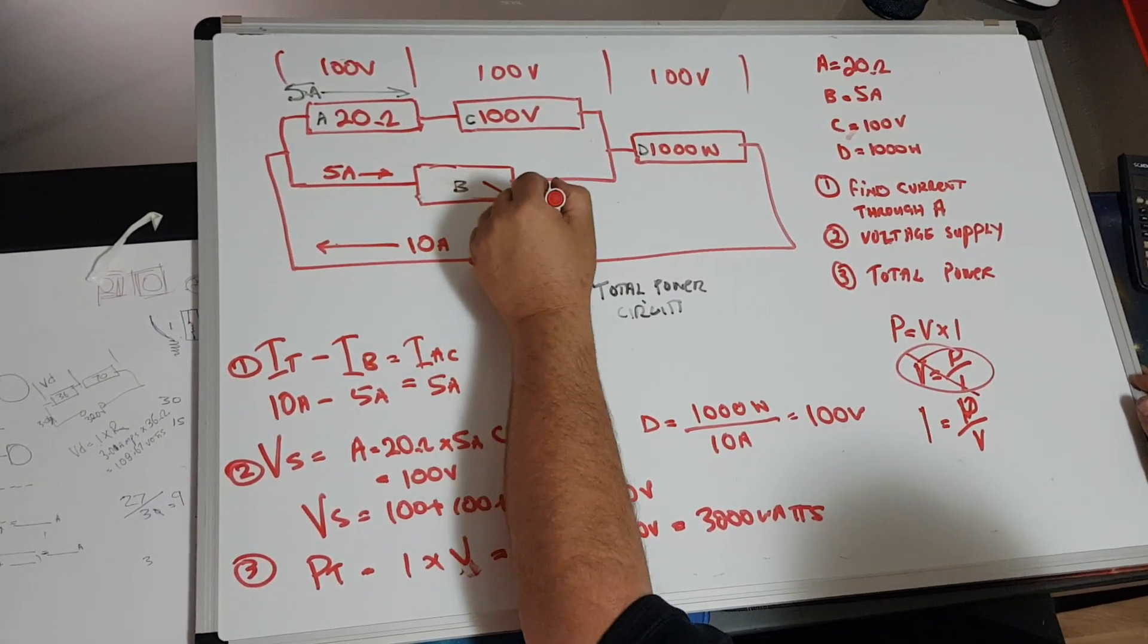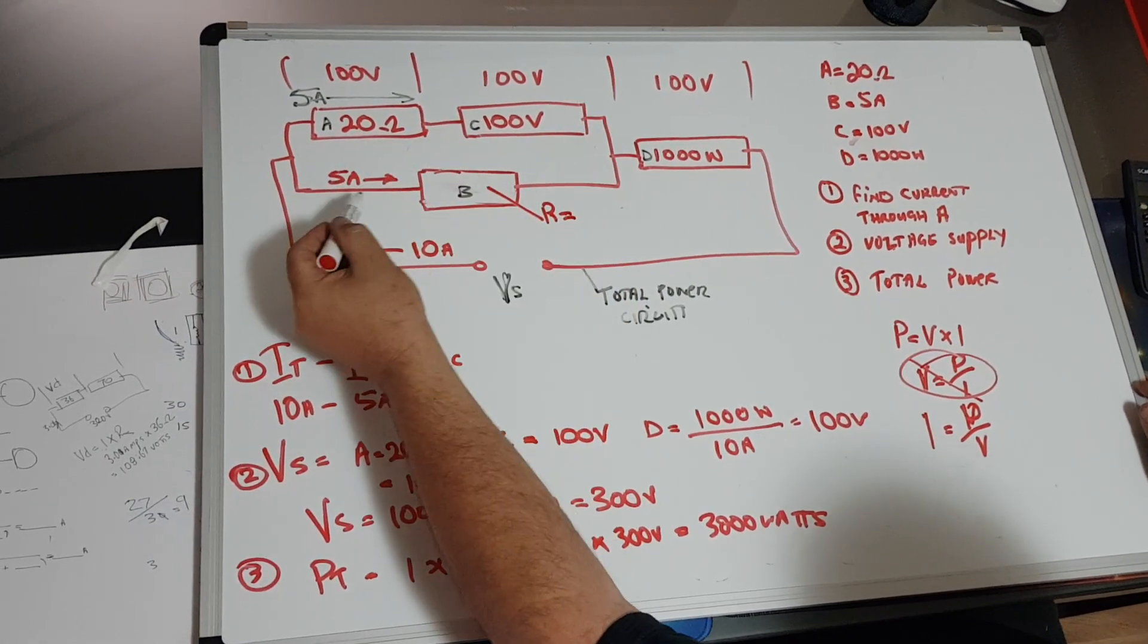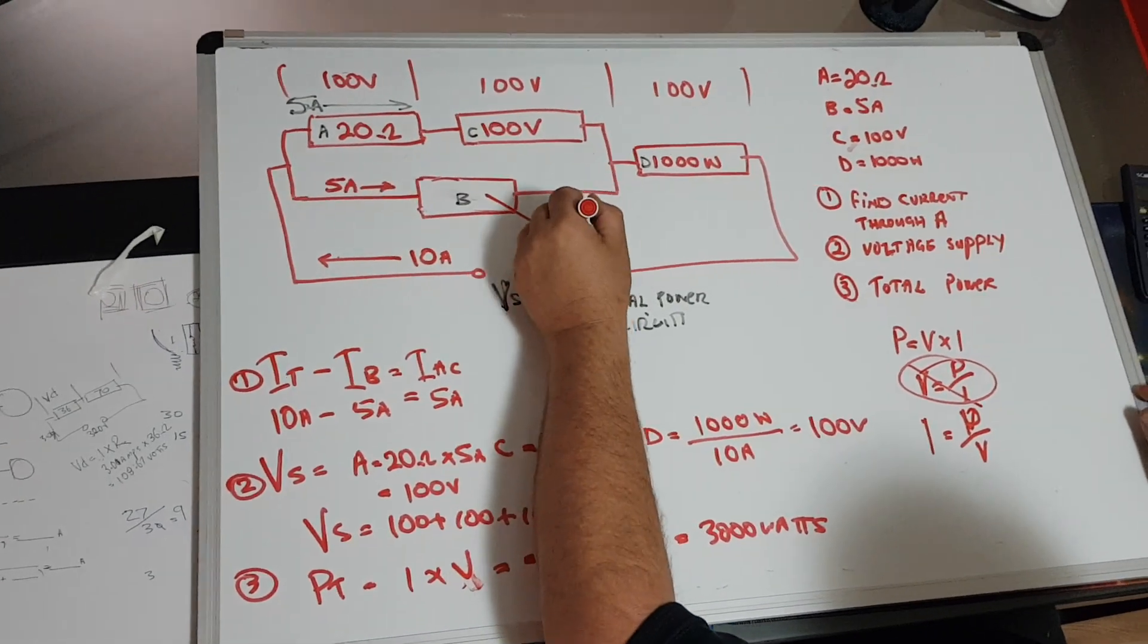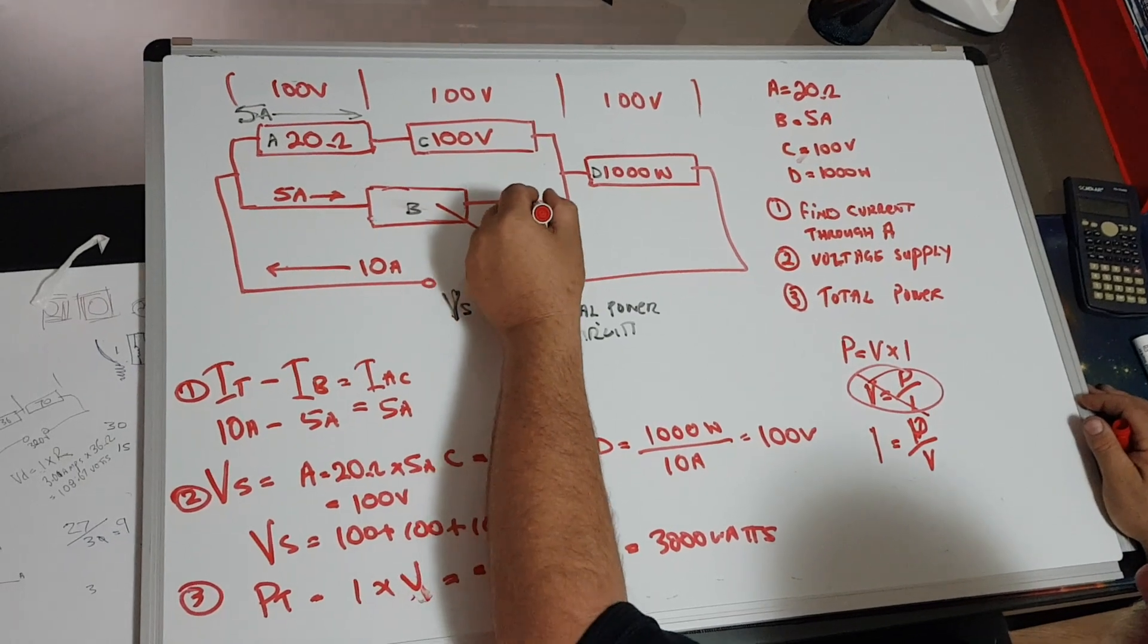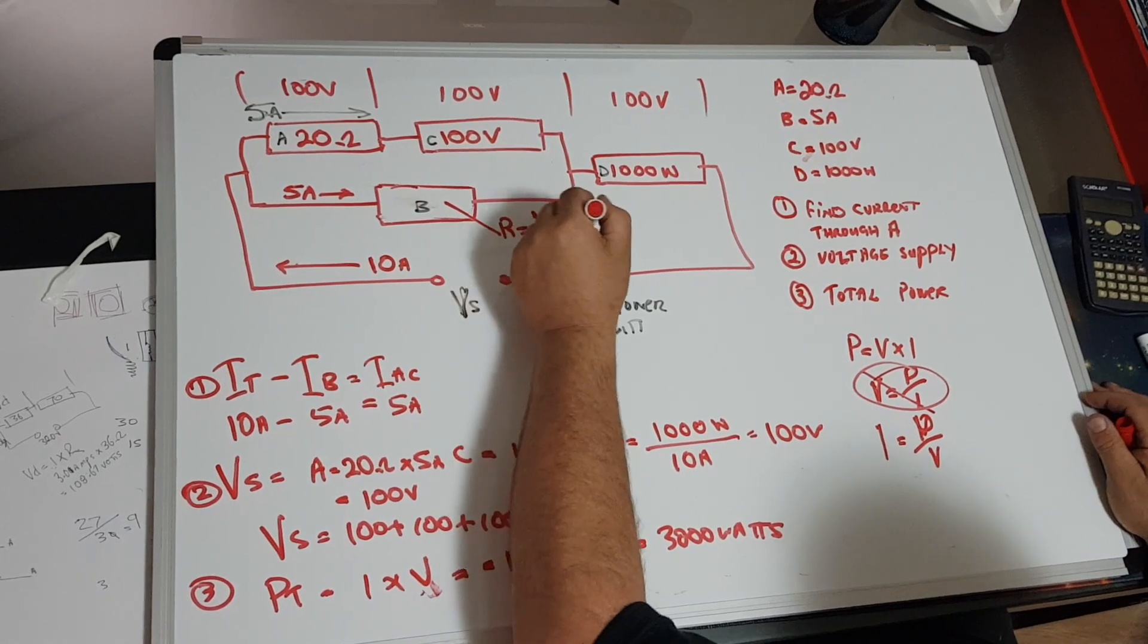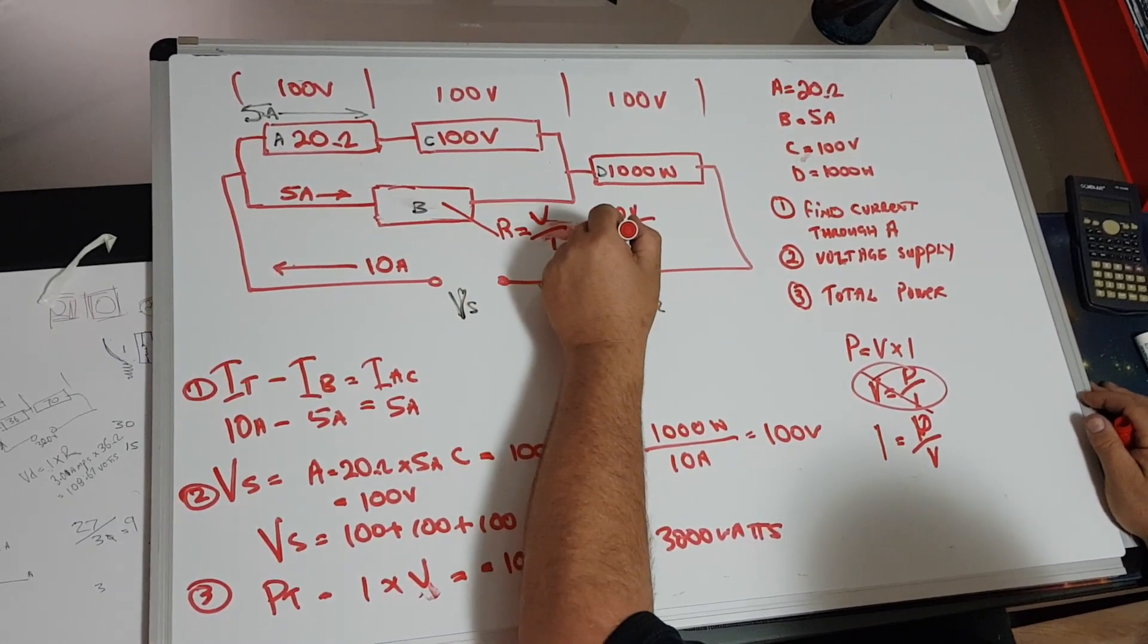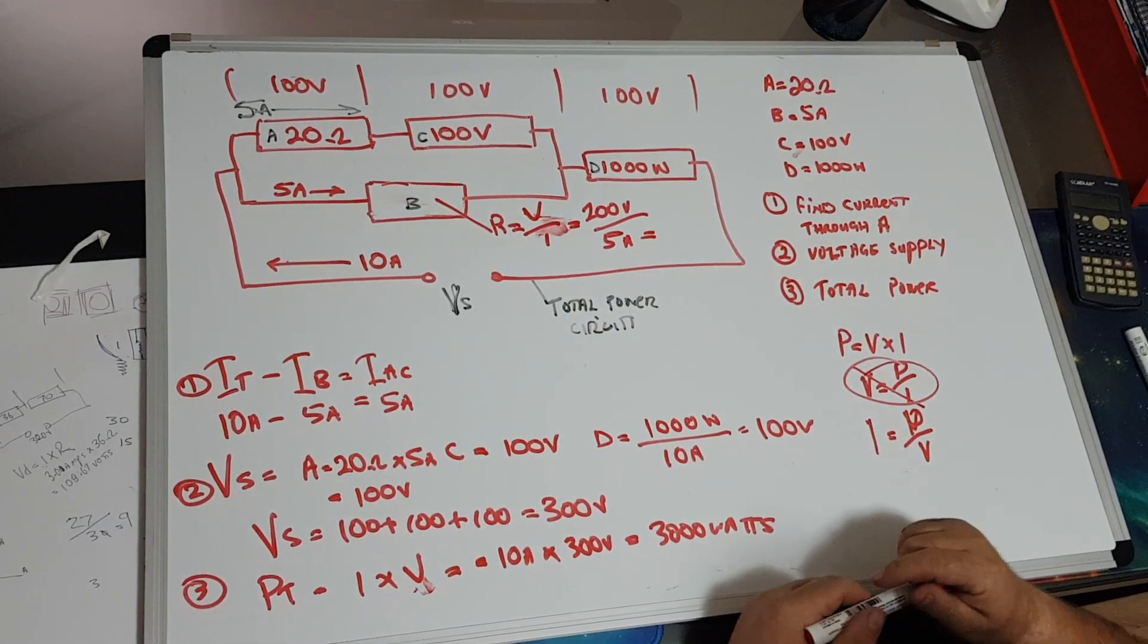If I had to find the resistance of this, this is another one we can do. We've got 5 amps going through it, 200 volts across it, so V over I, which equals 200 volts divided by 5 amps.